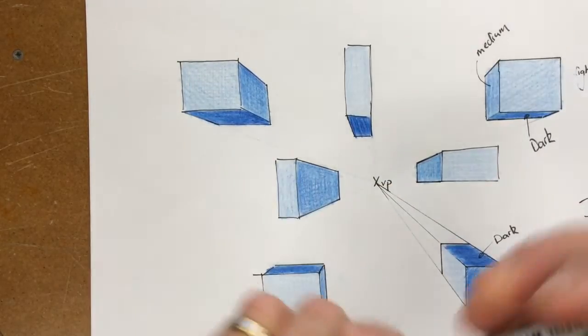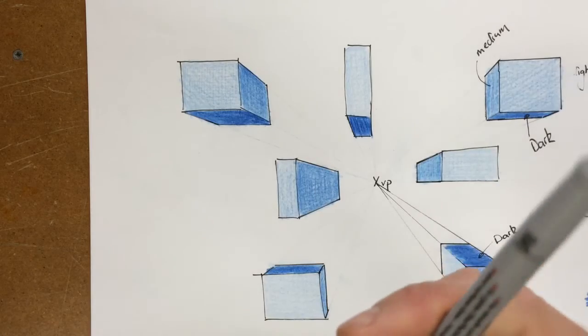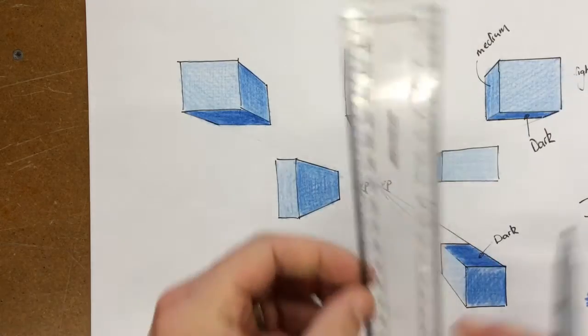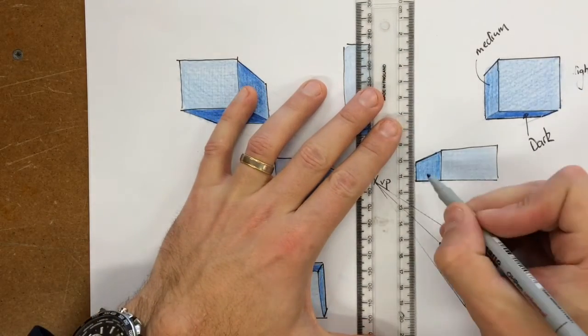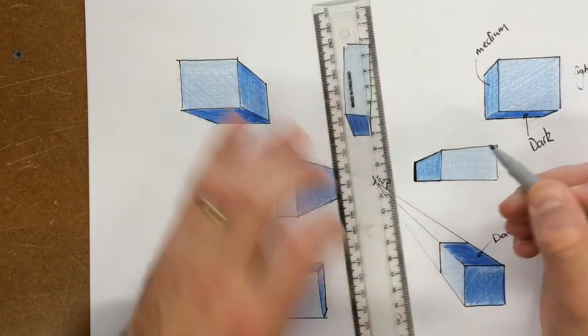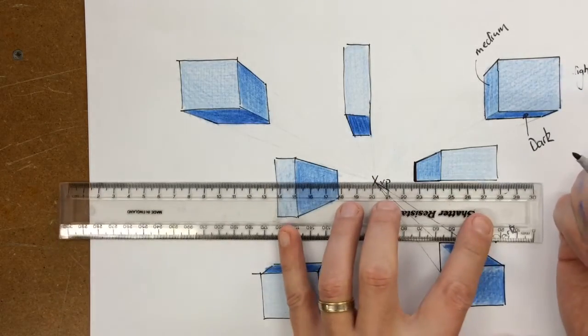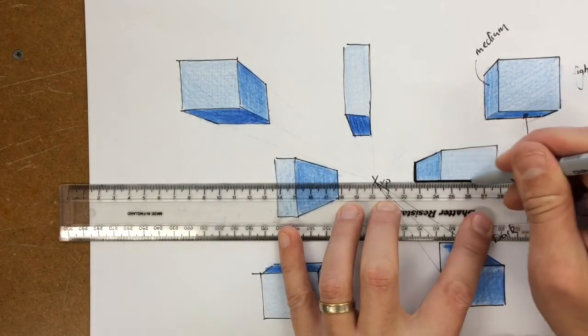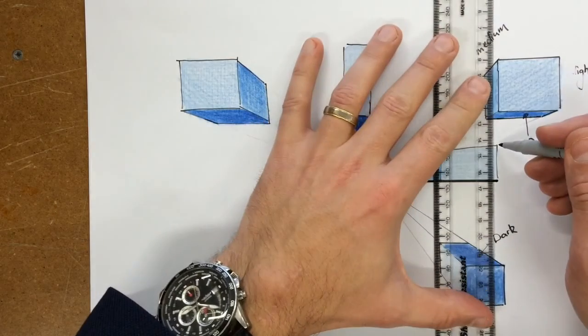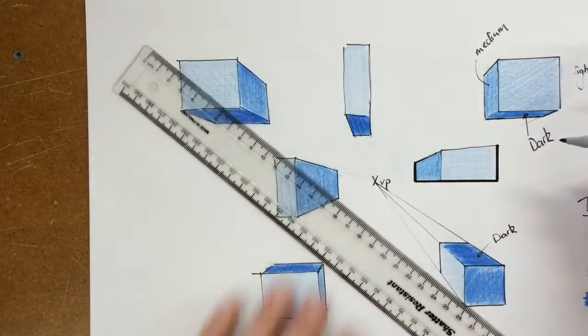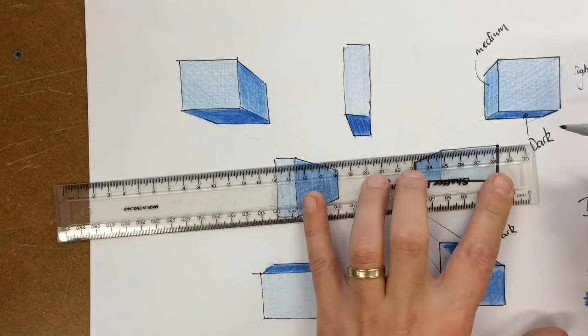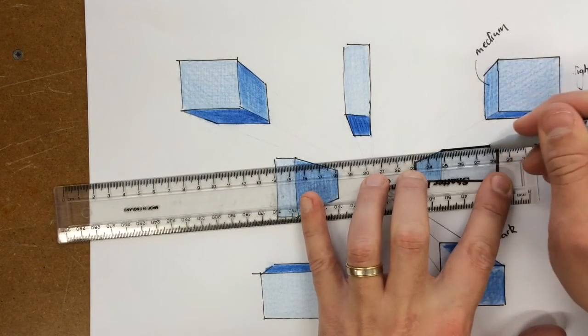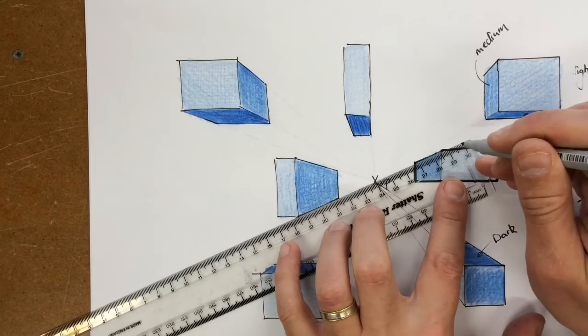Get a thick pen, not too thick though, or even a black pencil crayon, and what I want you to do is go over the outline like so, but it's really important that you only do the outline, and you must use a ruler.